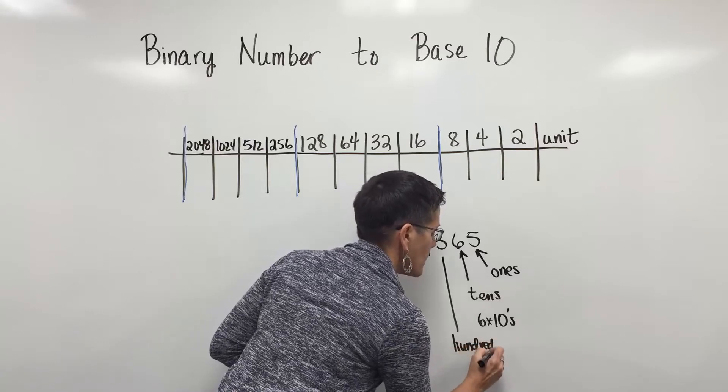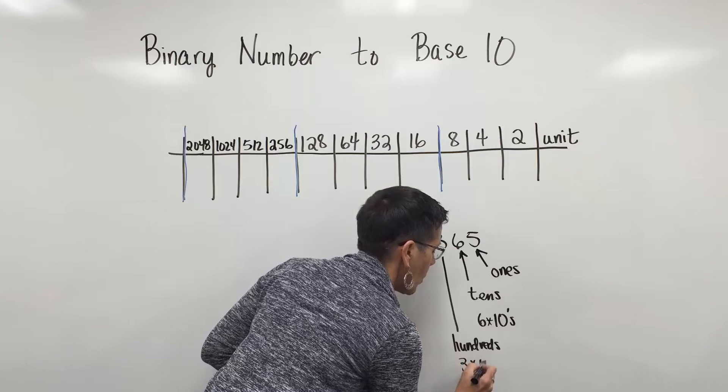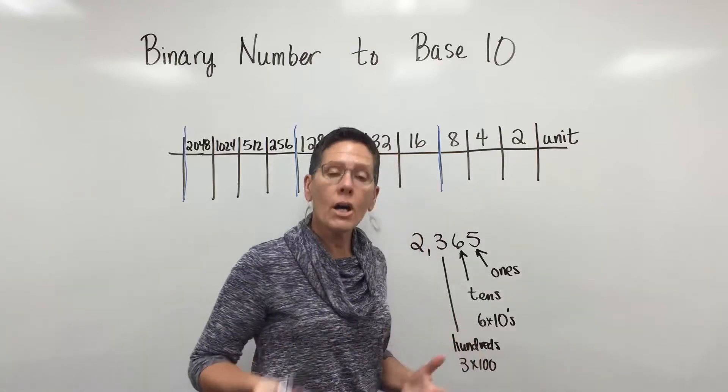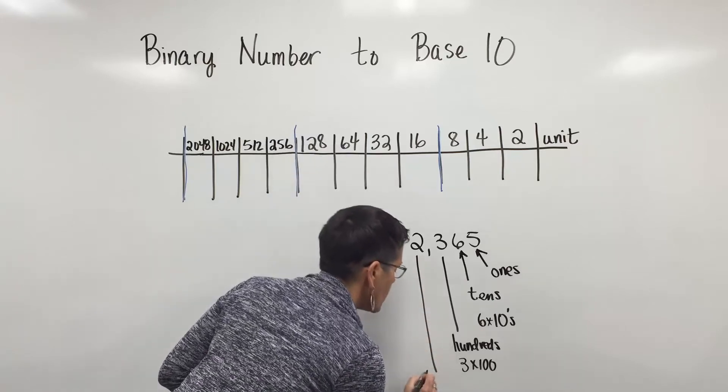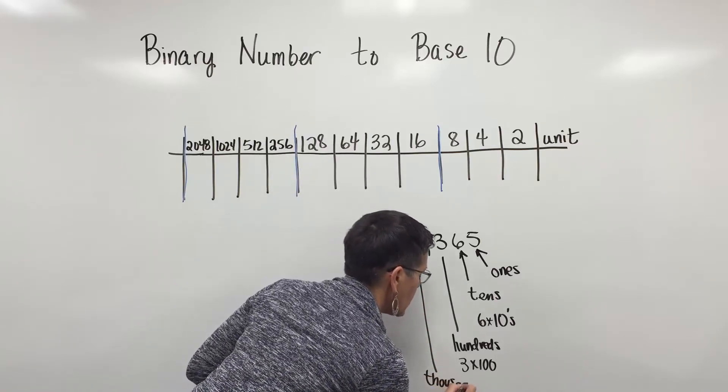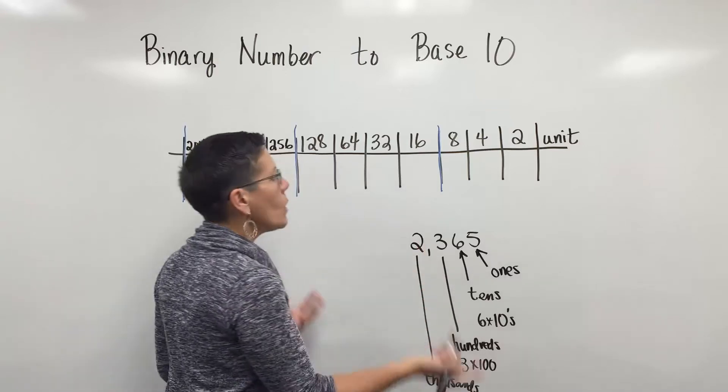The 3 is in the 100s position. It represents the number 300, or 3 100s, again a value of 300, and the 2 is in the 1000s position, 2 1000s.